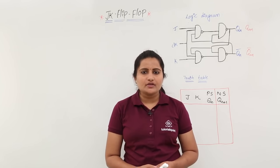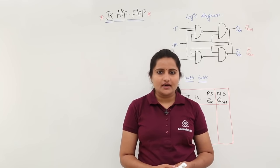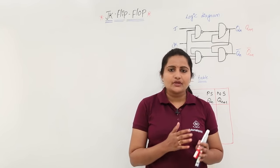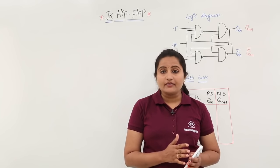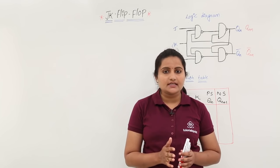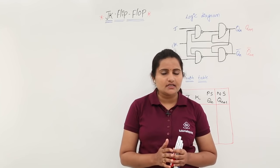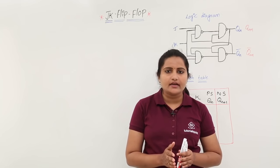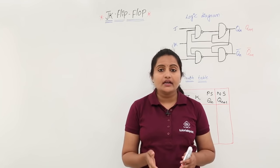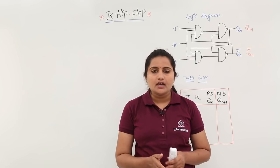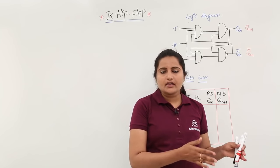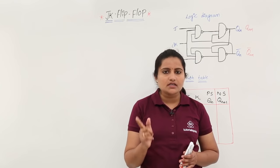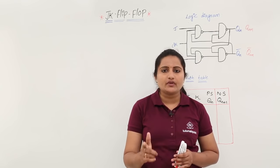In this class we are going to discuss about JK flip-flop. As we know, SR flip-flop has 4 states: no change state, set, reset, and indeterminate state. Out of these 4 states, 1 state is going to waste.